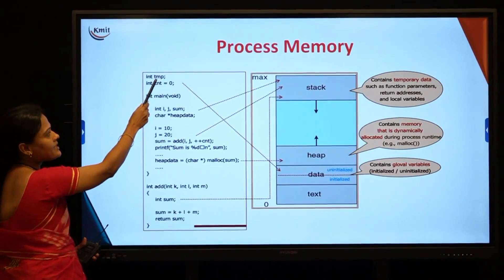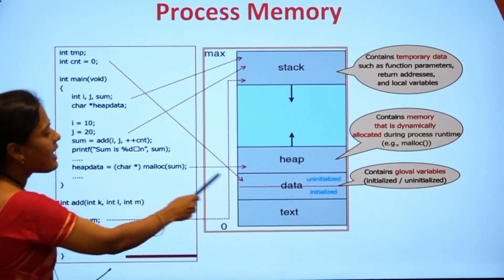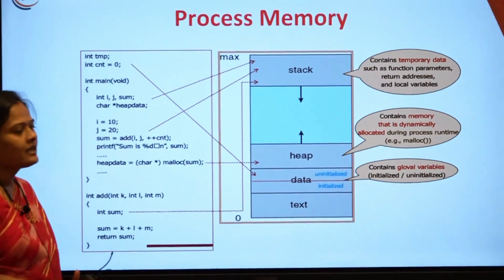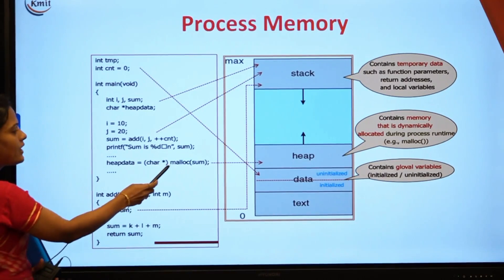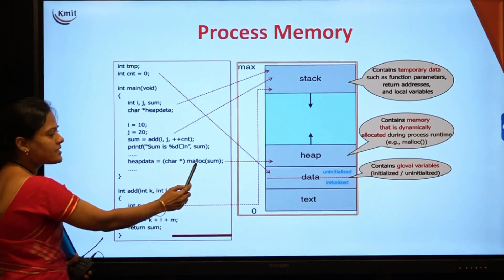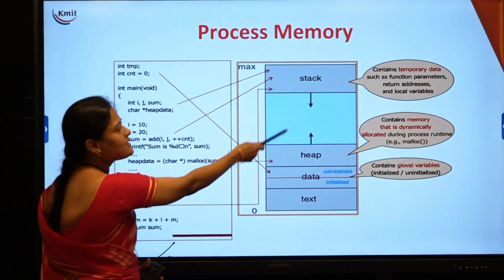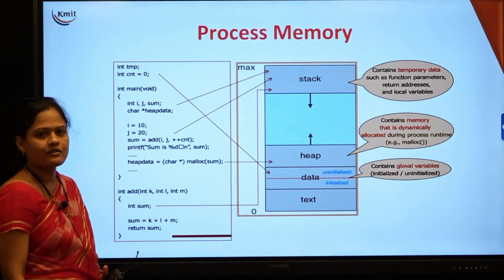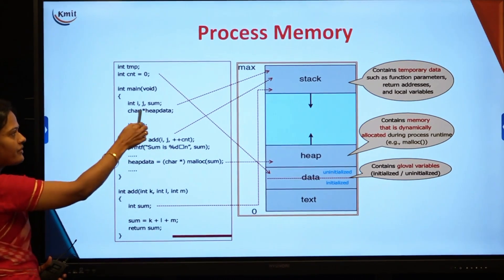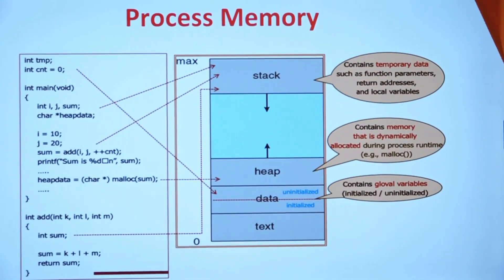In this example, the temporary variable and count, which are global variables where one is initialized and the other is uninitialized, are stored in the data part. The heap part of the process memory holds all variables allocated using dynamic memory allocation functions — for example, memory allocated using malloc is stored in the heap. The stack contains all the local variables or the return addresses of variables. These are the four major parts of a process memory.